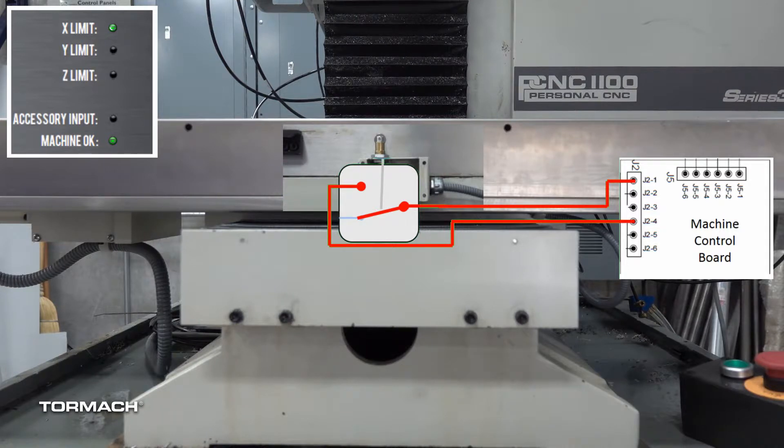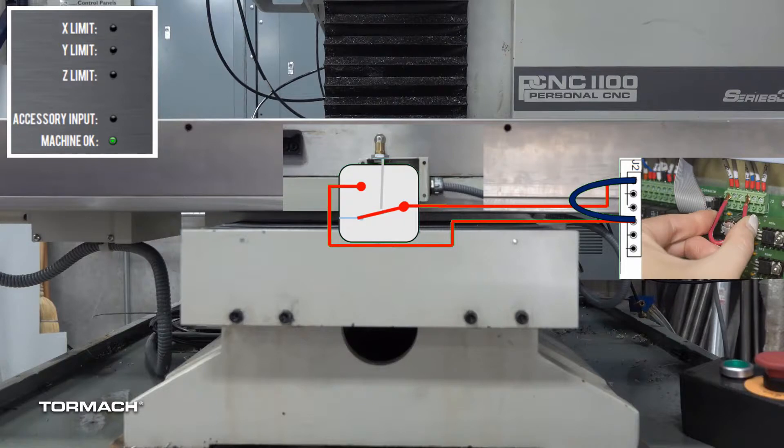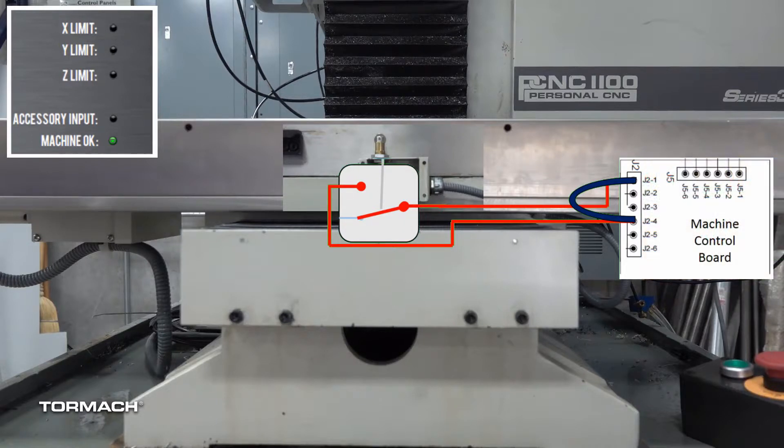Our diagnostic steps guide you to test the limit switch circuitry with a small jumper wire, first at the machine control board, and then at the limit switch enclosure.